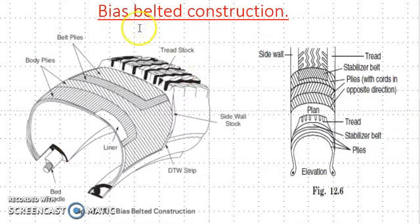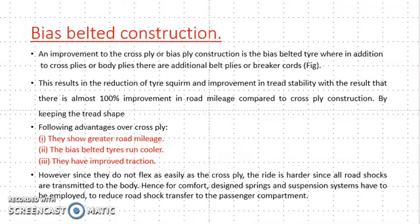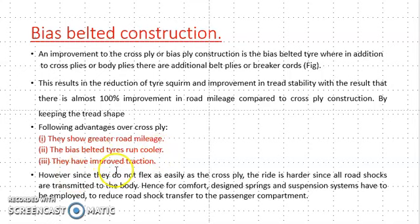After that, we have seen bias belted construction. Apart from the opposite plies, one additional stabilizer belt is used in this construction. The advantages are that it gives greater road mileage, it has rut pullers as compared to cross ply, and it has improved traction effect. All these things are better as compared to cross ply when using bias belt construction.